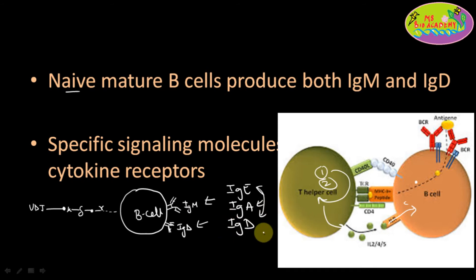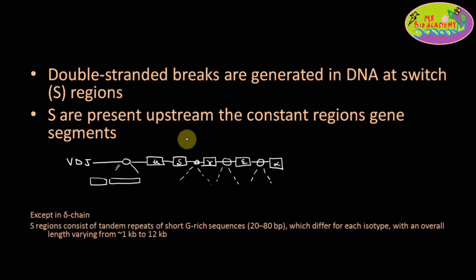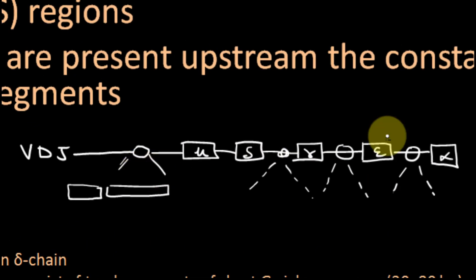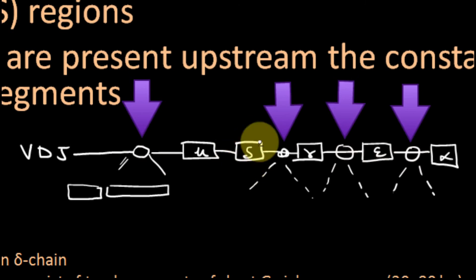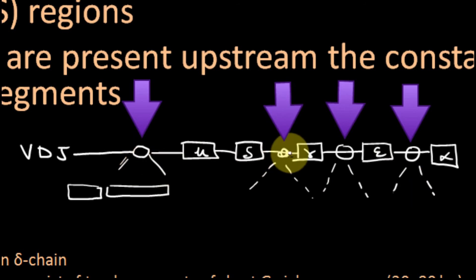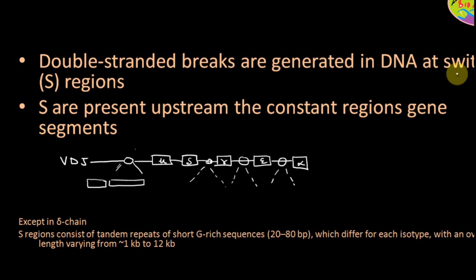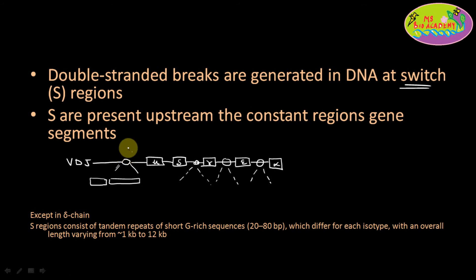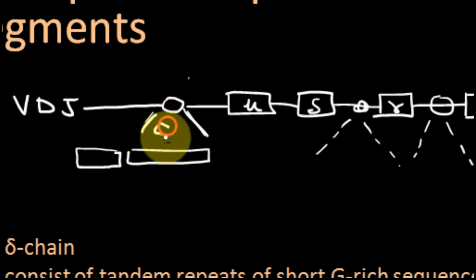Now let's go deeper into how this happens, what signals are produced, and how class switching occurs exactly. Looking again at these gene segments — the VDJ segments — just downstream of the VDJ sequence are the constant region genes. If you look carefully, upstream of each constant region gene, you will find a circular portion — except in the case of the delta gene segment. In all other isotype gene segments, there is one structure upstream called a switch region.